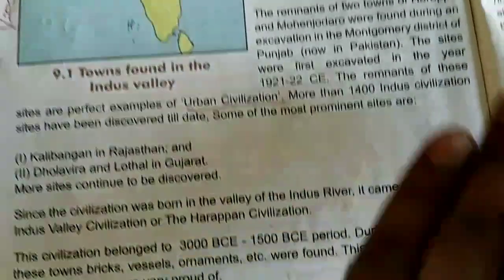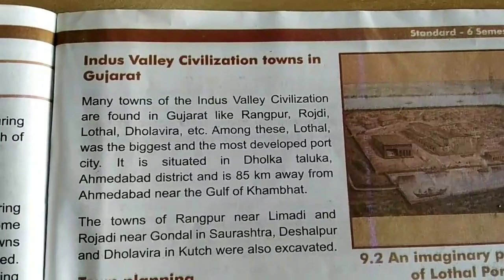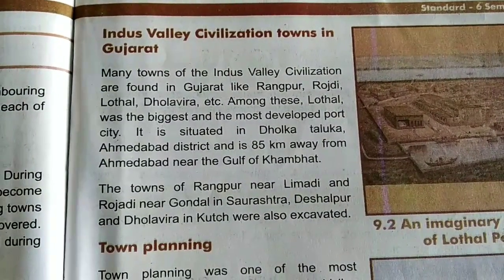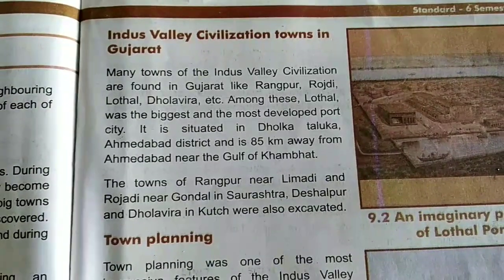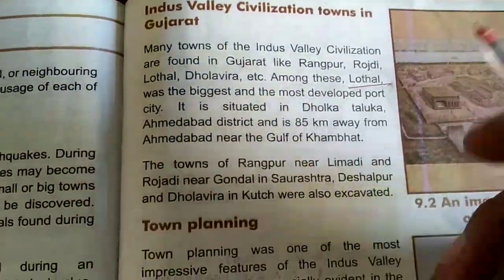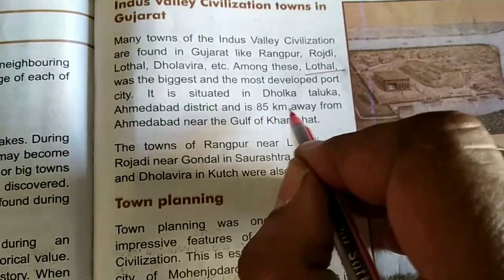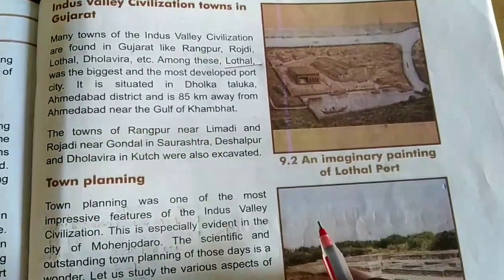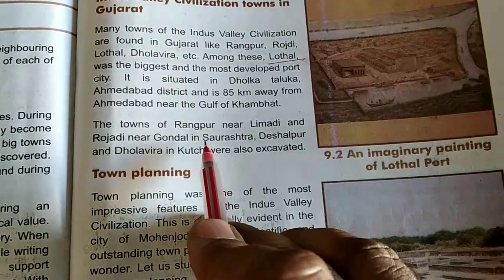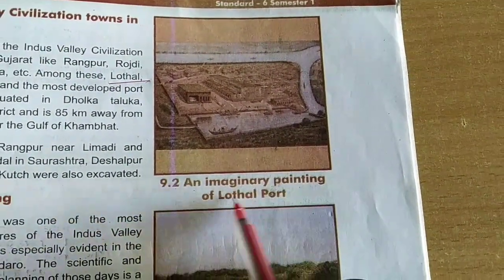Indus Valley Civilization towns in Gujarat. Many towns of the Indus Valley Civilization are found in Gujarat, like Rangapur, Rojadi, Lothal, and Dholavira. Among these, Lothal was the biggest and most developed port city. It is situated in Ahmedabad district and is 85 km away from Ahmedabad, near the Gulf of Khambhat. The towns of Rangapur near Limbadi and Rojadi near Gondal in Saurashtra, and Deshalpura and Dholavira in Kutch, were also excavated. Here is an imaginary painting of Lothal Port.